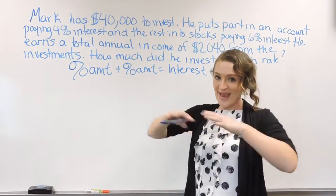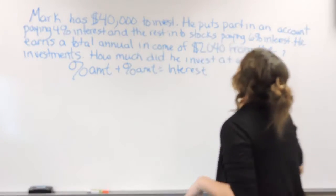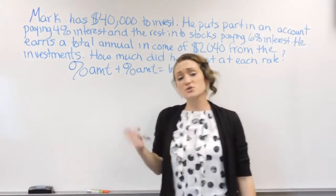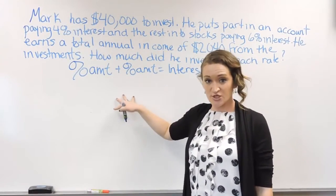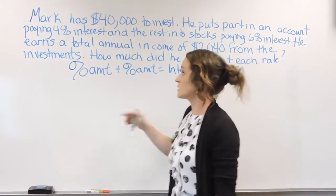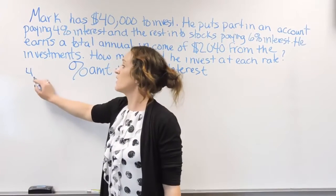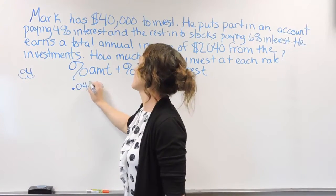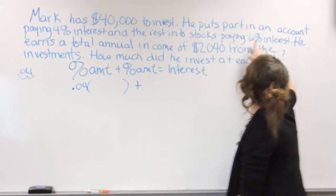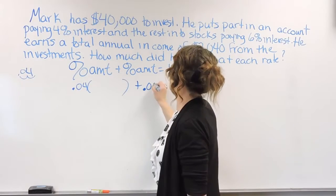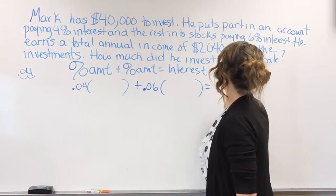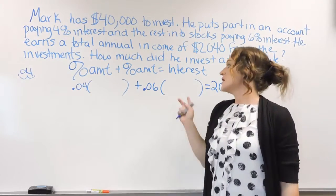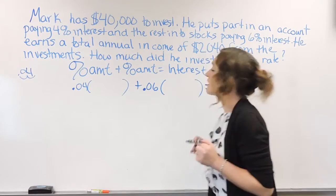Let's plug in what we actually know. He had a total of $40,000. He put some into the account at 4%. Keep in mind, when we plug percent numbers into equations, they need to be converted to decimals. To go from a percent to a decimal, you move the decimal point two places to the left. So 4% becomes 0.04, times whatever the amount is. Then 6% becomes 0.06, times whatever that amount is. And it equals the total interest — $2,040.